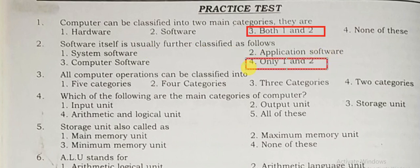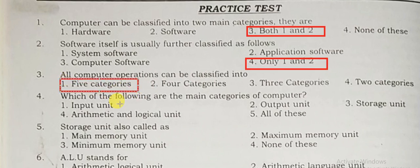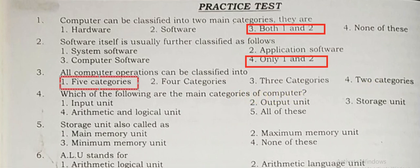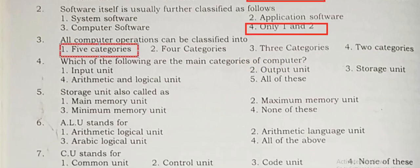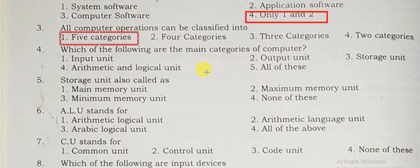All computer operators can be classified into 5 categories. Which of the following is the main category of computer? It is input, output, storage unit, and arithmetic and logical unit — these are the main categories of computers.